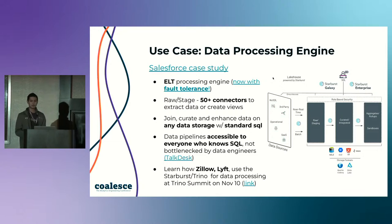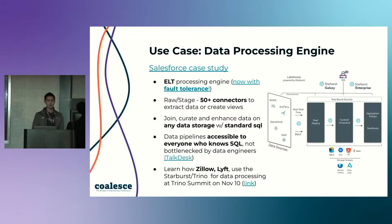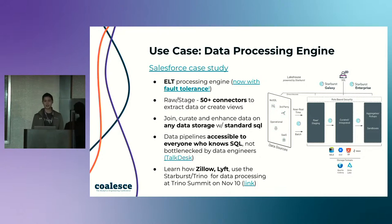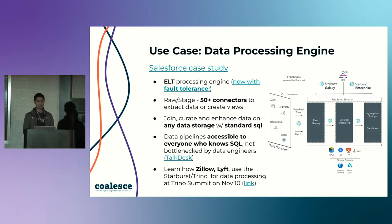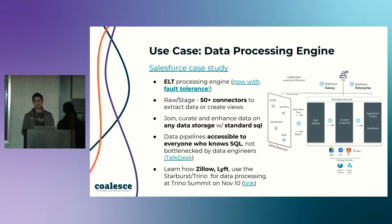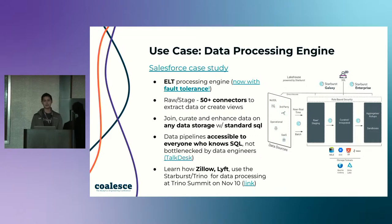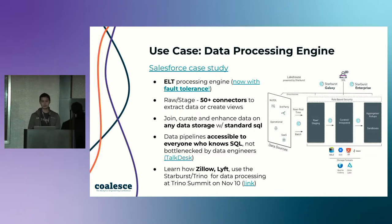The third use case: for those of you who've read the Trino paper, this was actually not an initial use case we envisioned when we developed Trino. But when we open sourced it and chatted with users at Facebook, Netflix, and LinkedIn, what we discovered was really surprising: everyone was hooking up Trino with Airflow and using Trino to do their data processing as well. That made a lot of sense — they wanted to take advantage of Trino speeds, the really interactive experience when developing data pipelines, and all the connectors for query federation.